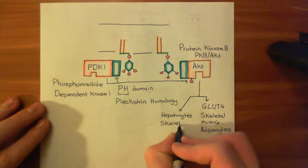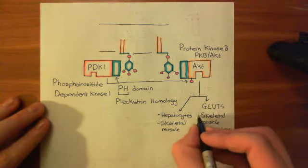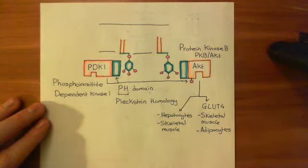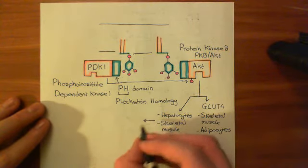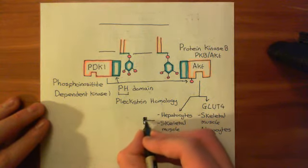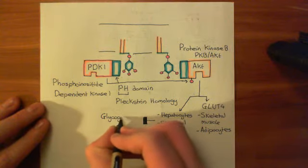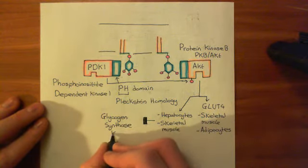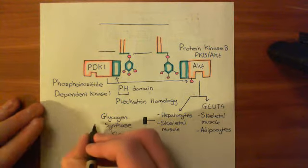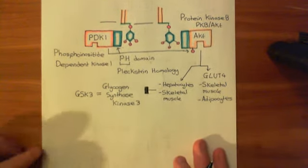In hepatocytes and skeletal muscle cells, protein kinase B is going to phosphorylate and inactivate an enzyme known as glycogen synthase kinase 3. The activation of protein kinase B leads to the inactivation — indicated by a blunt-ended arrow — of glycogen synthase kinase 3, abbreviated to GSK3.